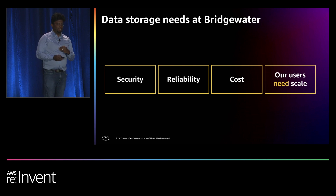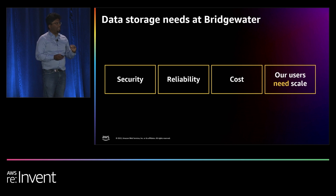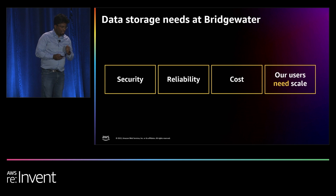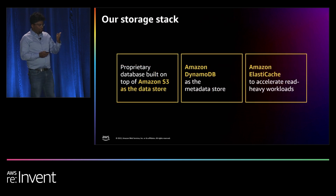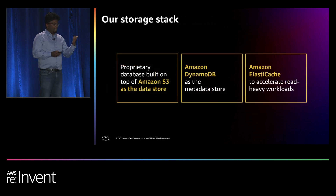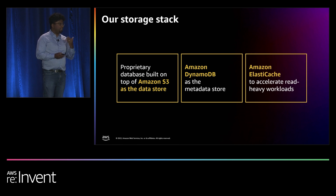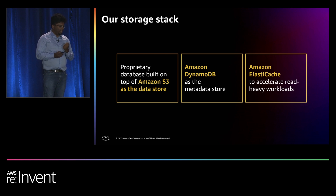At the end of the day, our users — these economic researchers — care about scale. They want to build new complex models, understand the economy, use new forms of data, scale it out, and get their insights. We built our proprietary database on top of Amazon S3 as a data store. Under the hood, we use columnar formats for our files. Amazon DynamoDB is our metadata store, and ElastiCache is our accelerator.